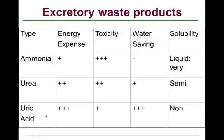The third excretory waste product is uric acid. It's a large, complex molecule compared to the others and requires more energy to manufacture. However, it is non-toxic — in fact, it's a crystalline material. Its water savings is very, very high, and it's non-soluble in water — it comes out as a semi-solid paste. Animals that excrete uric acid include birds and reptiles, and some people would consider birds to be reptiles.